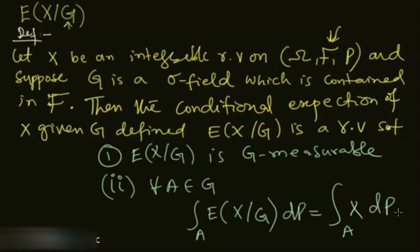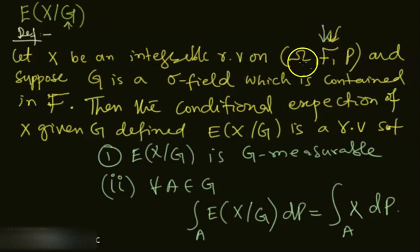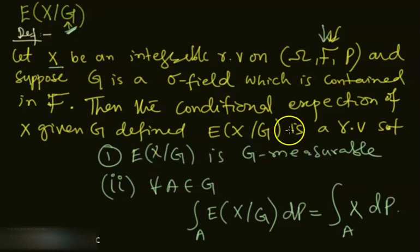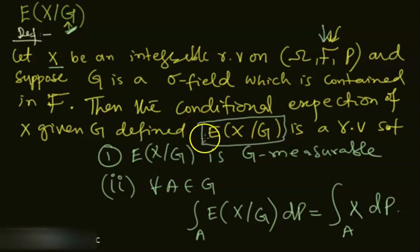So if you have a sigma field G contained in F, then you can define the expectation of a random variable X with respect to that particular sigma field, and that conditional expectation E[X|G] is itself a random variable satisfying these two properties.